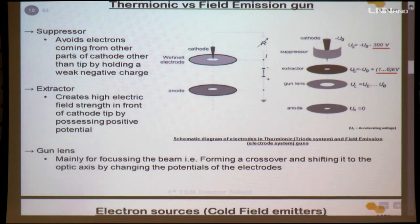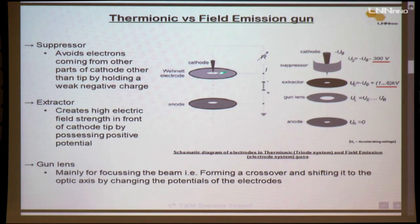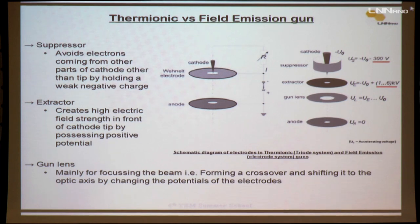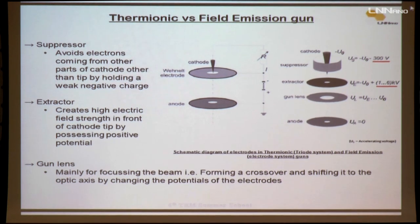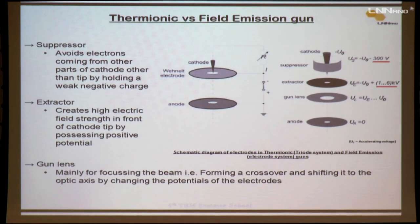For the field emission gun, comparing the schematics of a thermionic gun and a field emitter: the Wehnelt cylinder is removed and replaced with three different parts — suppressor, extractor, and gun lens. The suppressor applies a small negative voltage to keep all electrons on the optic axis. The extractor provides the electric field to initiate electron emission from the field emitter. The gun lens is comparable to the anode, mainly for focusing the electrons and accelerating them to the required voltage.